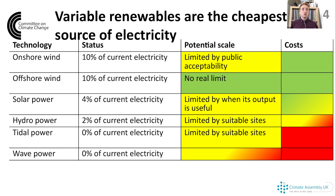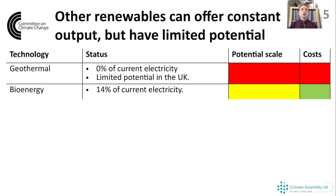In conclusion, variable renewables are cheap. There's still vast potential for onshore wind and solar power in the UK, and the potential for offshore wind is tremendous. Moving on to slide five, there are other renewable options where output is more predictable. First, geothermal energy - you drill pipes deep into the Earth's crust to extract heat and turn it into electricity. This is popular in countries with high temperatures close to the surface, such as Iceland, but there's not much potential for it in the UK, although there are some projects in Cornwall. Another technology is bioenergy, including waste to energy, which will be covered in a later presentation.